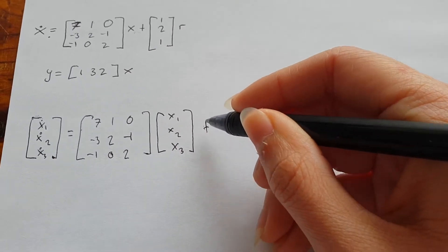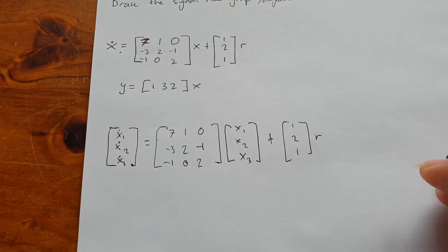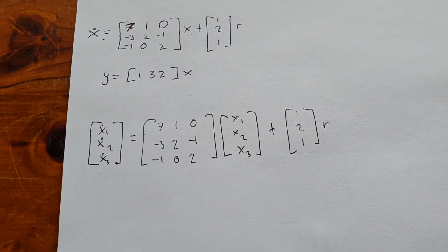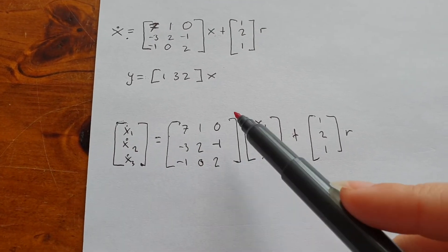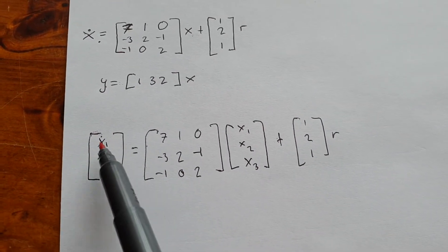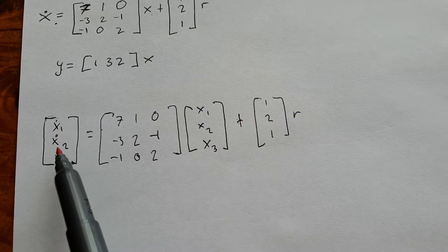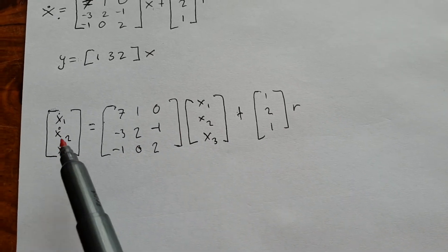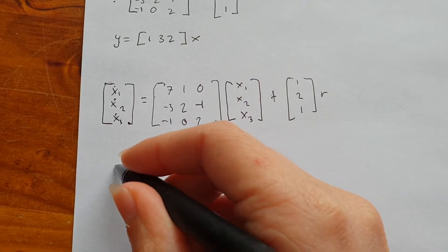Then we have plus [1; 2; 1] times r. We'll leave this section for after we've completed the first part. The thing we have to work out is we have to multiply these matrices together. The top row is all in terms of x_dot1, the second row in terms of x_dot2, and the third row in terms of x_dot3.